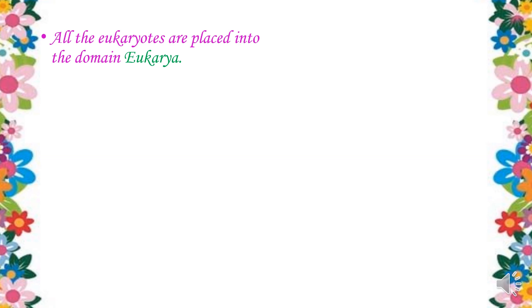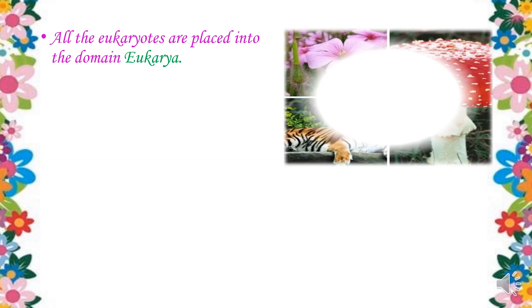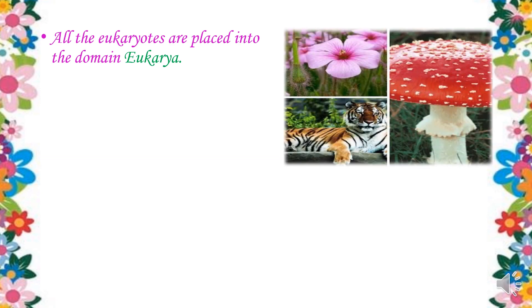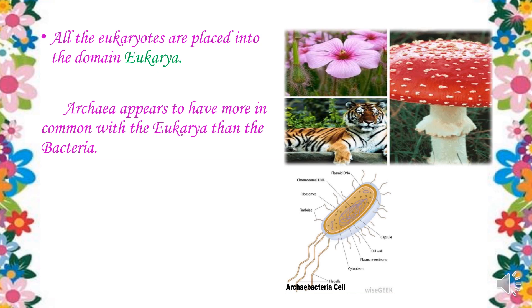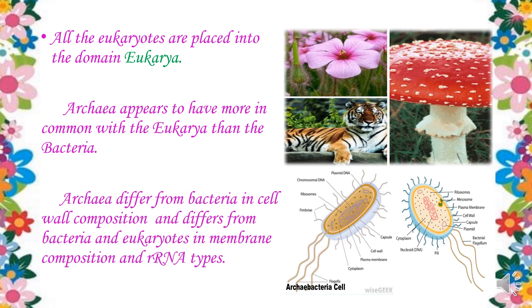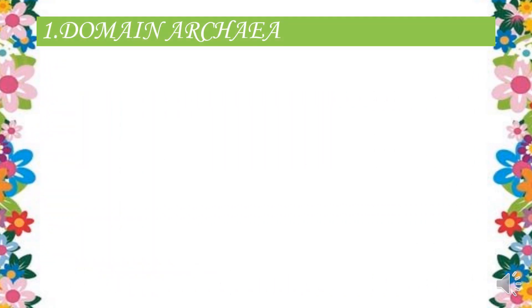All the eukaryotes are placed in a domain called Eukarya, which includes all the plants, animals, and fungi. Archaea shares some similarity with the Eukarya when compared to the Bacteria. However, Archaea also differs from Bacteria in cell wall composition, and it differs from both Bacteria and eukaryotes in membrane composition and rRNA types.